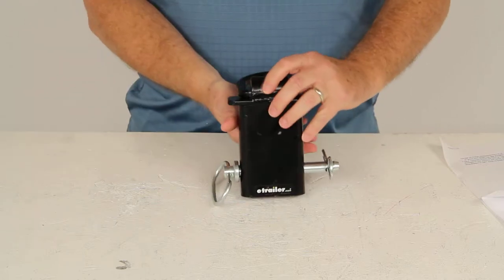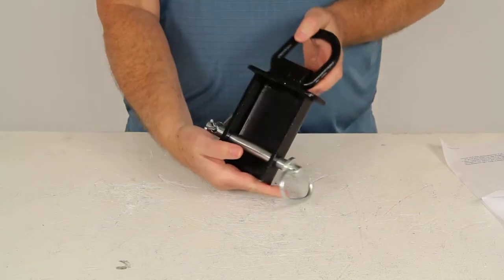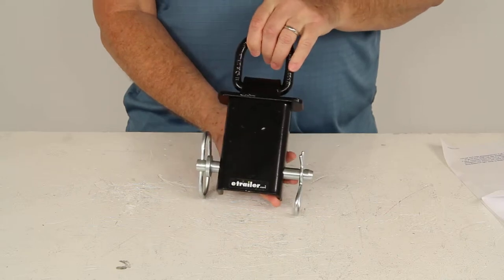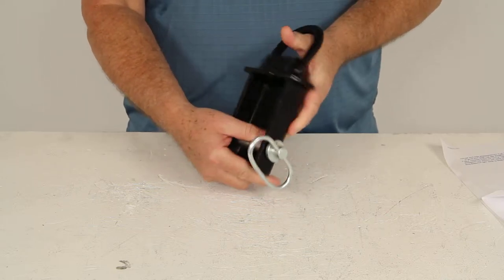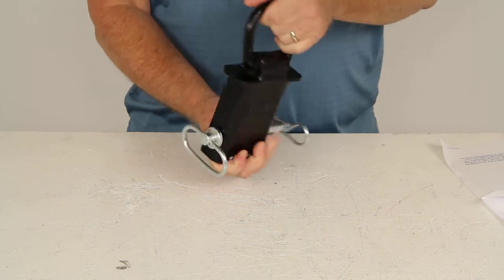Today we're going to review part number WFSPDR. This is the Redline 2 inch by 4 inch stake pocket steel tie down anchor for flatbed trucks or trailers.